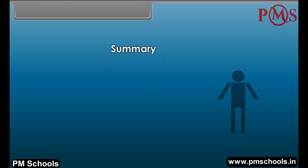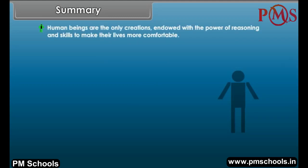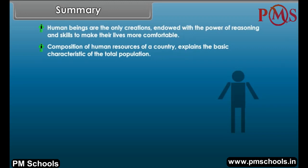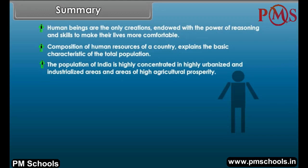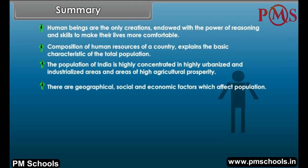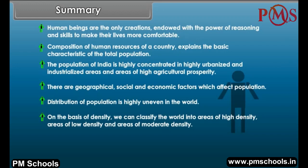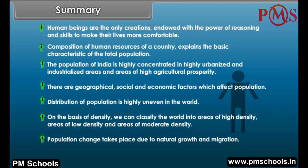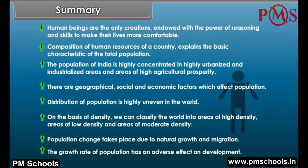Summary: Human beings are the only creations endowed with the power of reasoning and skills to make their lives more comfortable. Composition of human resources explains the basic characteristics of the total population. The population of India is highly concentrated in urbanized, industrialized, and agriculturally prosperous areas. Geographical, social and economic factors affect population distribution, which is highly uneven in the world. Population change takes place due to natural growth and migration, and the growth rate of population has an adverse effect on development.